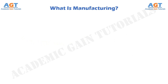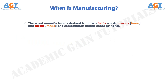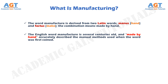What is manufacturing? The word manufacture is derived from two Latin words: manus, which means hand, and factus, which means to make. The combination means made by hand. The English word manufacture is several centuries old, and made by hand accurately described the manual methods used when the word was first coined.